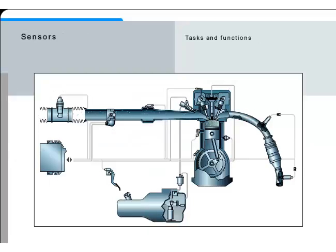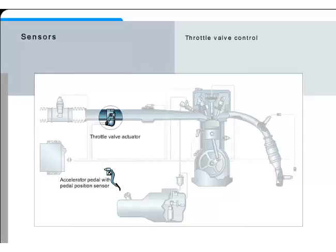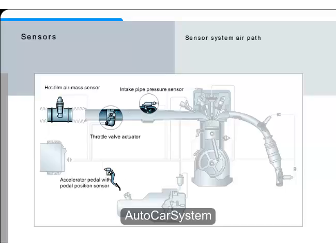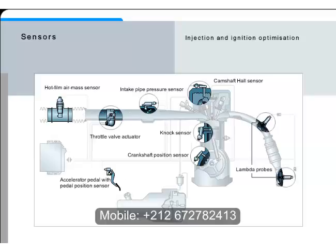In this chapter, you will become acquainted with the most important sensors and the associated input signals, and you will learn what effects these signals have on engine control. You will learn about the throttle valve control, the air path sensor system, the speed-dependent input signals, and the two most important sensors for injection and ignition optimization.